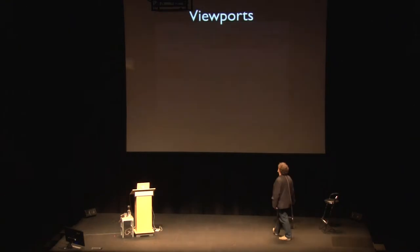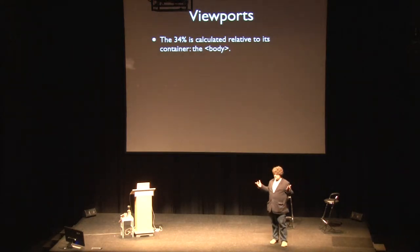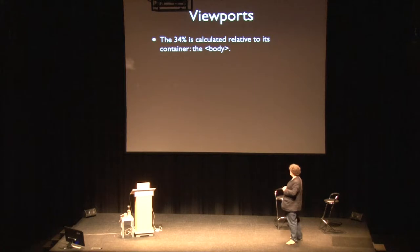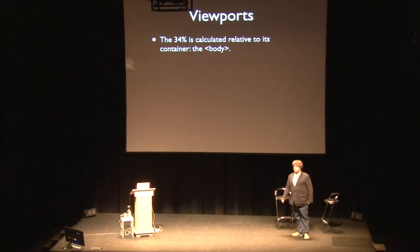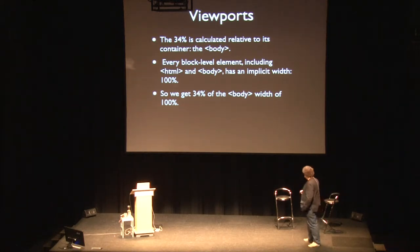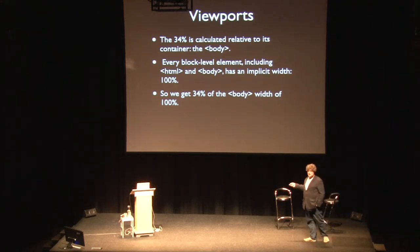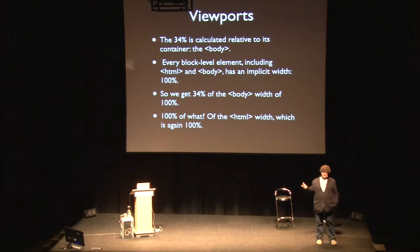General CSS rule: if you use percentages in widths or related declarations, it is calculated relative to the width of the parent element — that's true throughout CSS. In this case, the parent element of our div is the body, which raises the question: what's the width of the body? That's the second general CSS rule: every block-level element, including the HTML and body elements, has a default width of 100% unless you set something else in CSS. So we get 34% of 100% — 100% of what? Of the HTML element. And there we get exactly the same problem. The HTML element is 100% wide — but 100% of what? Now we come to the viewport.